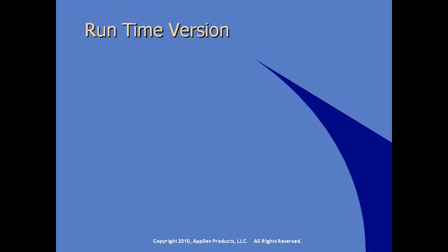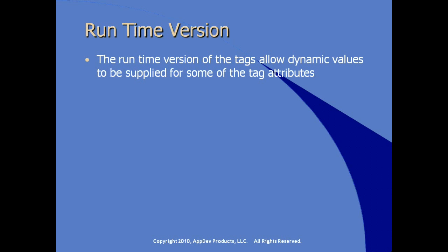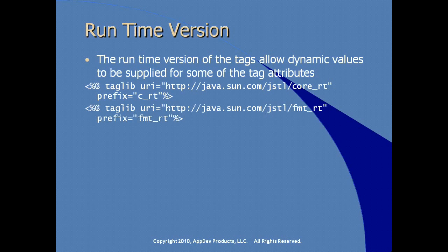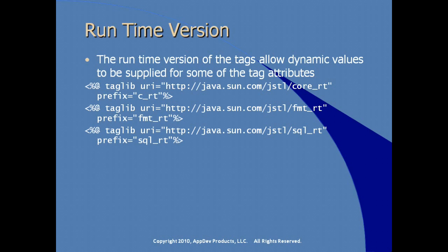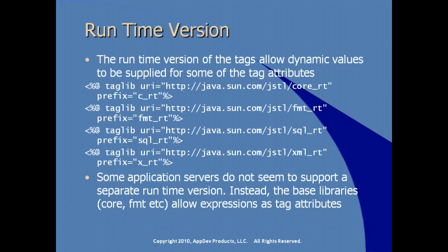There are also extensions providing what's called a runtime version of the tags, giving us additional features such as the ability to supply dynamic values for some tag attributes. The URIs for the core and FMT tag libraries are slightly different for the SQL library — notice the extension in the naming with underscore RT, and traditionally the prefixes also have underscore RT added. Some application servers do not support a separate runtime version; instead, the base libraries allow expressions as tag attributes. For example, Tomcat 5.x is one such server, while we're using JBoss which supports the runtime environment.